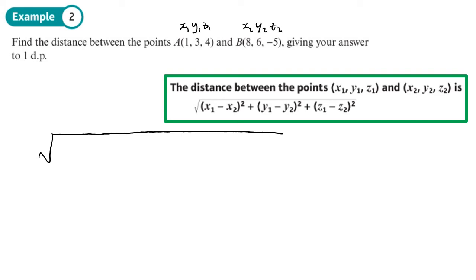So I'm going to do 8 minus 1, all squared, plus 6 minus 3, all squared, plus negative 5 minus 4, all squared. What does that become? Well, 8 minus 1, that's going to become 7 squared. 6 minus 3 is going to become 3 squared. The negative 5 minus 4 is going to become negative 9 squared. Now, even if you had done them the other way around, 1 minus 8, I would have had negative 7 squared, negative 3 squared, 9 squared. You still get exactly the same answer.